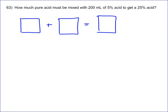I think about what I'm mixing together. Well, I'm mixing pure acid, so my percent acid in this is 100%. I'm mixing it with 5% acid, and my goal is to get 25% acid. So I'm taking 100% acid, mixing it with 5% acid, trying to get 25% acid.